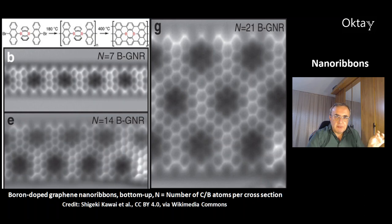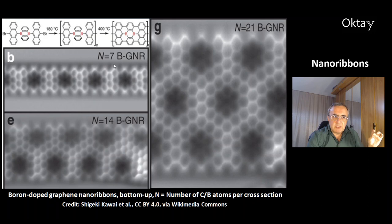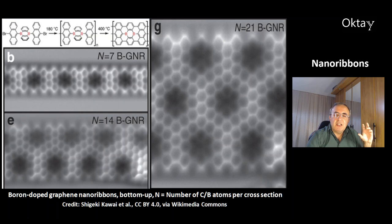This is boron-doped graphene nanoribbons made by another bottom-up synthesis — building nanoribbons from smaller units via chemical reaction. You heat a carborane compound to 180°C to get the long ribbon structure, then heat to 400°C to remove several hydrogen atoms and form new carbon bonds, yielding boron-doped nanoribbons. Since boron has only three valence electrons versus carbon's four, the boron atoms are part of the pi-electron system but provide a lower pi-electron density.